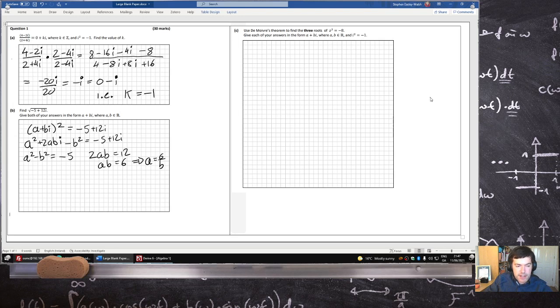So if I sub that in, I get 36 over b squared minus b squared equals minus 5, and multiply by b squared, I get 36 minus b to the power 4 equals minus 5b squared. Take everything to the right, I get b to the 4, minus 5b squared minus 36 equals 0.